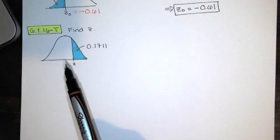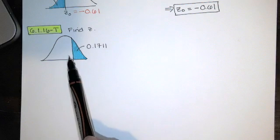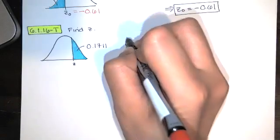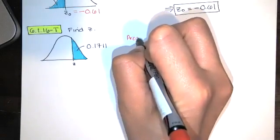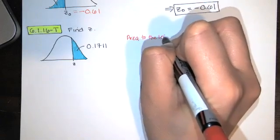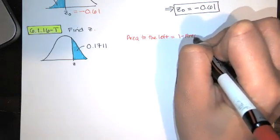We know that since this is a probability distribution, the area under the curve has to be 1. So the area to the left, which is what I want so that I can find that z, is just 1 minus the area to the right.